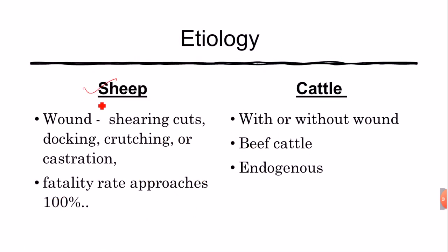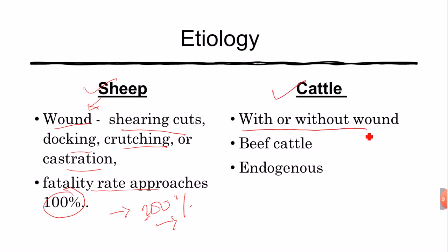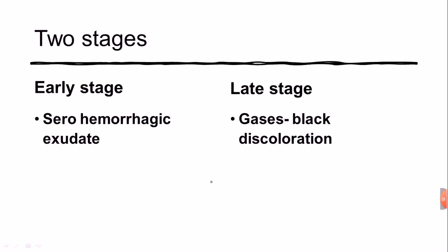In sheep, this disease occurs mostly due to wounds — through shearing cuts, stalking, crutching, or castration. The fatality rate approaches 100%; if the animal gets this disease, there is nearly a 100% chance it will die. Most often it happens that without showing signs, the owner finds the animal just lying on the floor, already dead. In cattle, the disease can cause infection with or without a wound, and it is endogenous as discussed.